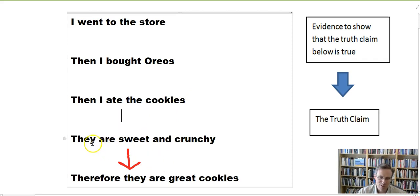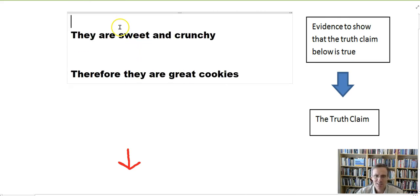Now what about this last example? They are sweet and crunchy? Am I giving that as evidence for the fact that they are great cookies? Well, yeah, actually it looks like I am, right? I'm trying to convince you of some conclusion that they are great cookies. And my evidence for that is here's some properties of the cookies. They're both sweet and crunchy and presumably those are desirable properties for cookies.